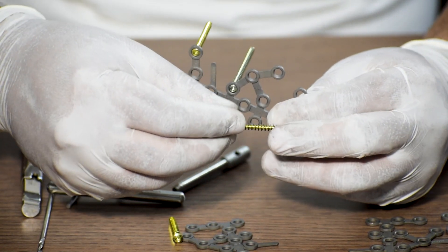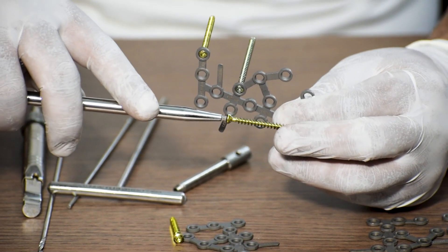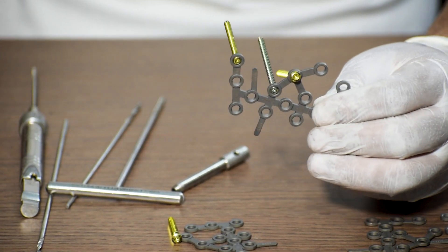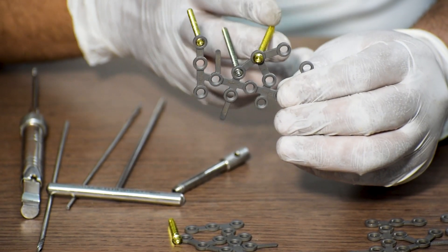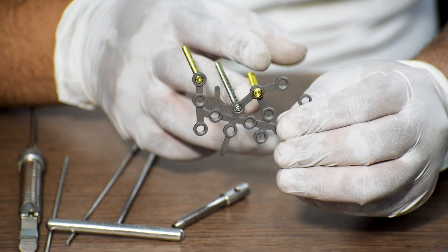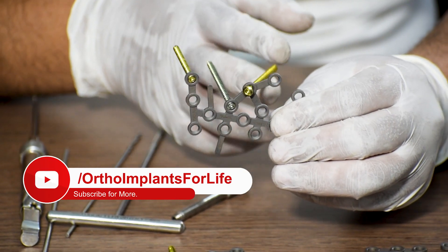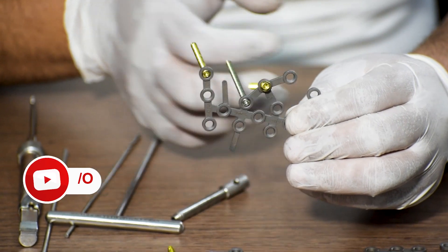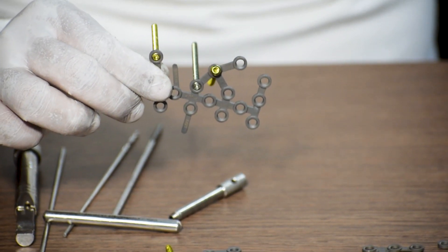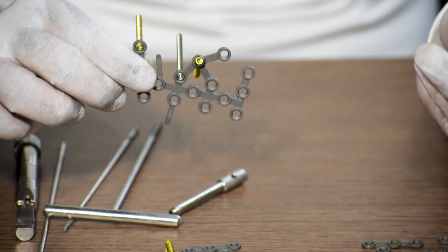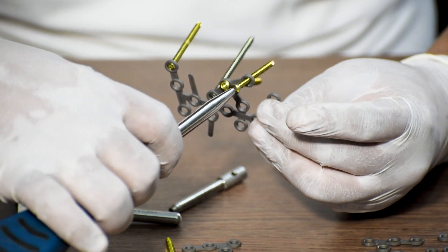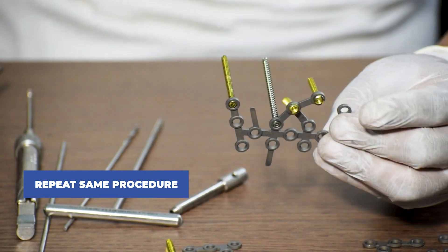If advised by surgeon, we will also provide 4 mm full thread cancellous which can be again fixed to the plate with the help of a 3.5 mm screwdriver. The difference between the locking cancellous and a full thread cancellous screw is, locking cancellous screw gets locked in both the bone and the plate. And full thread cancellous only gets locked in the bone and not in the plate. Now we repeat the same process to fix as many screws as per the surgeon's call.